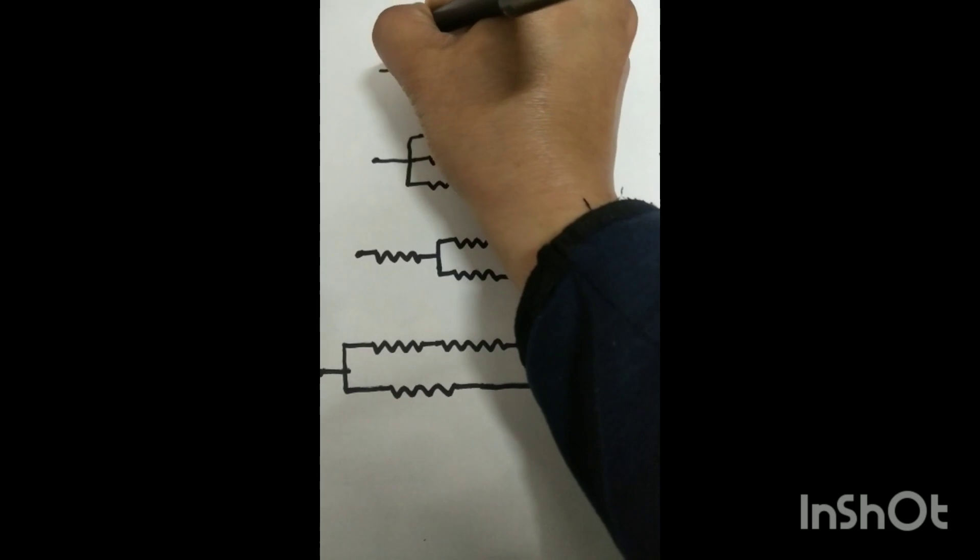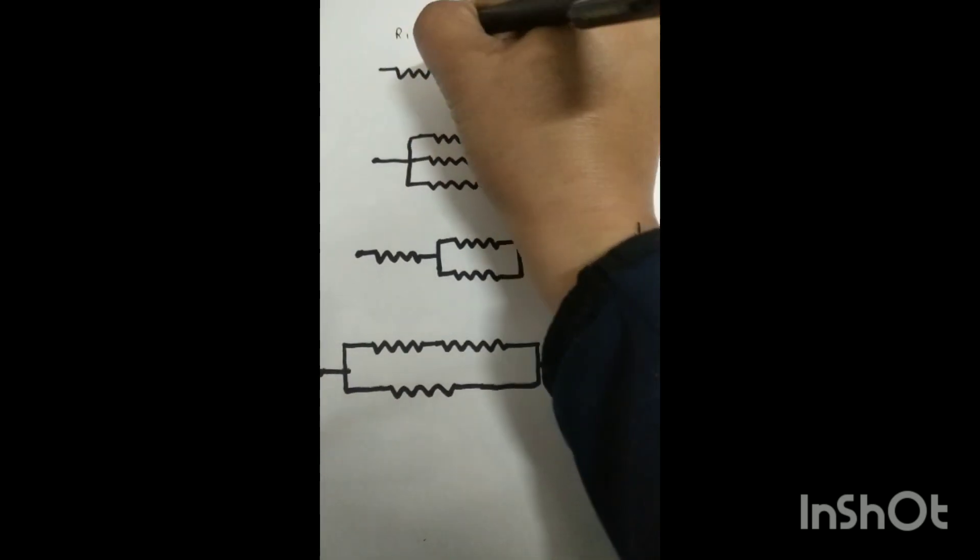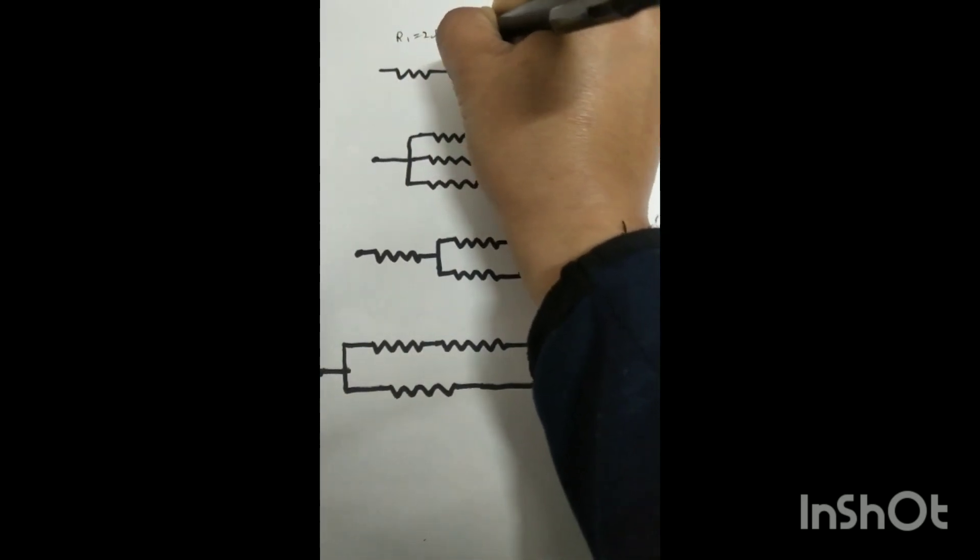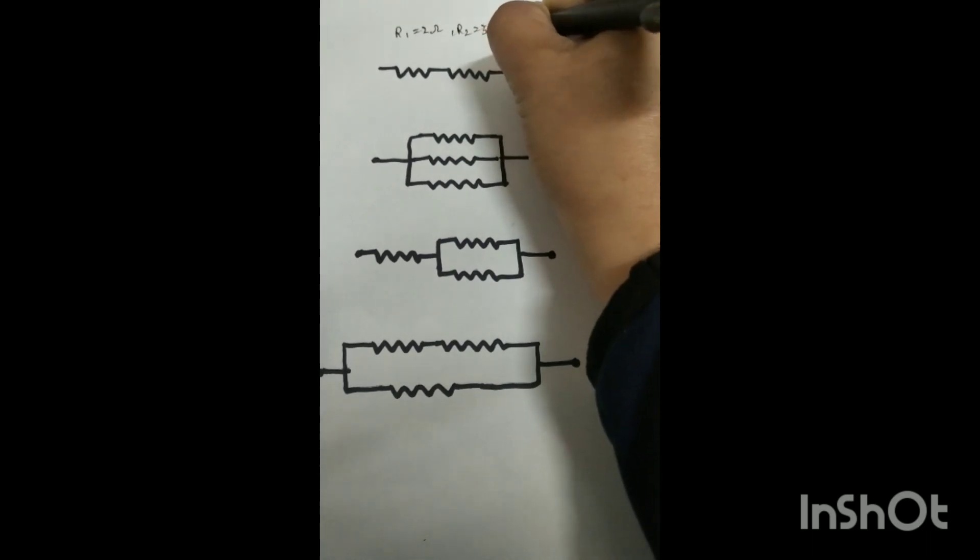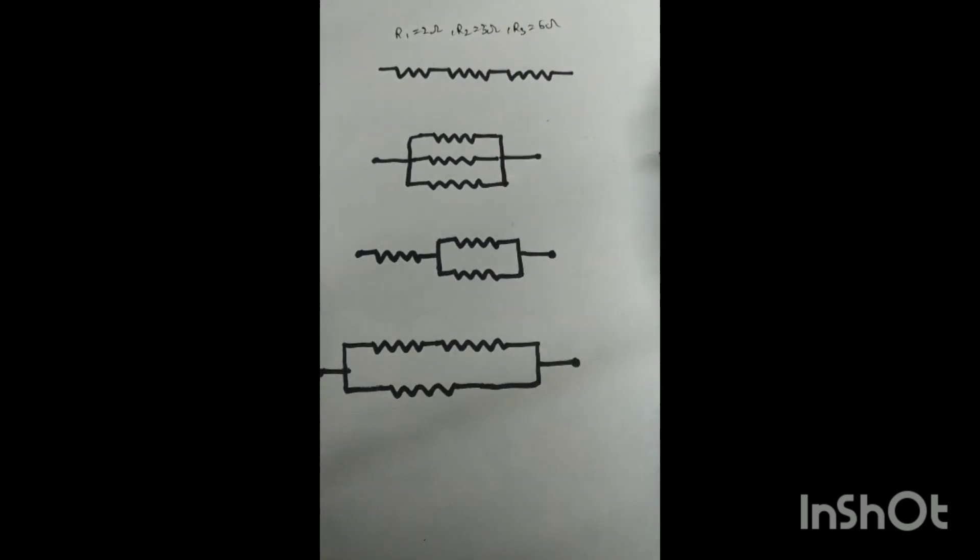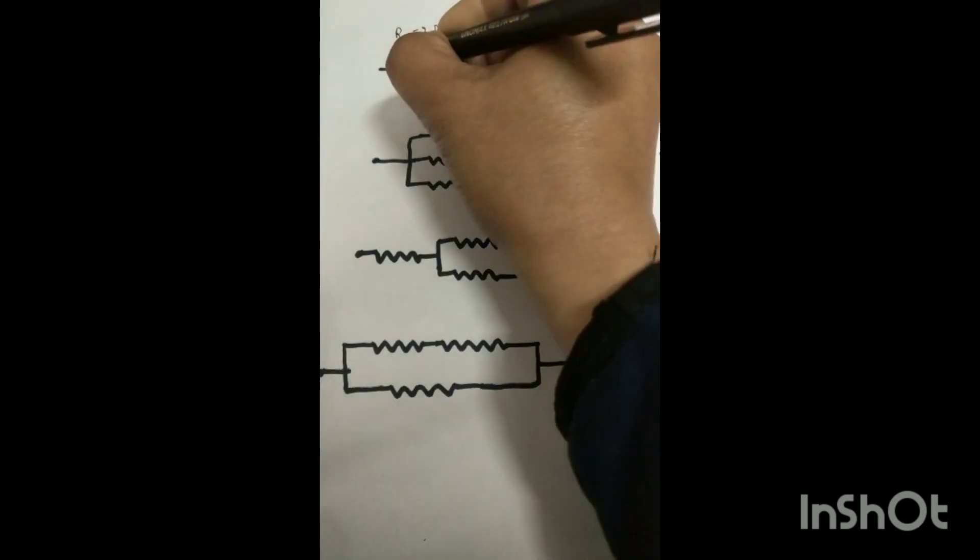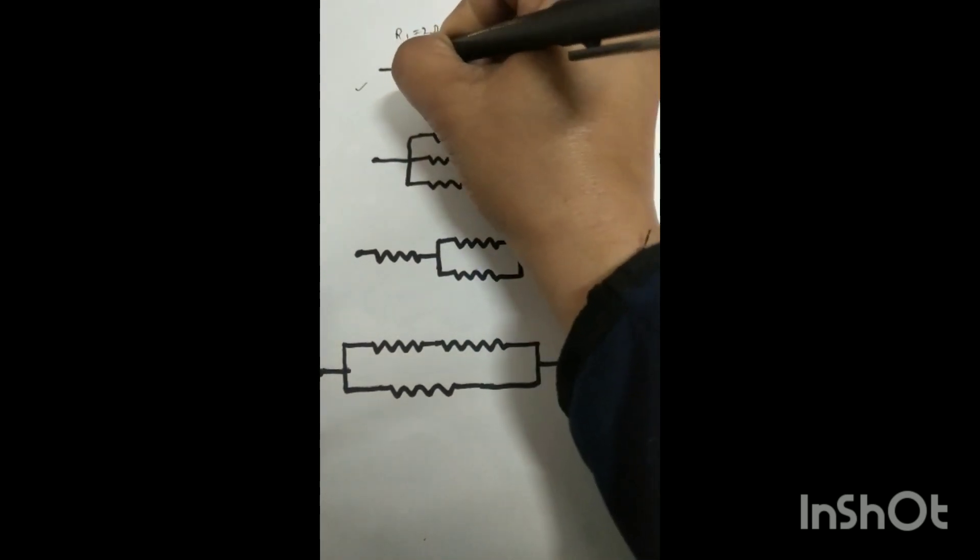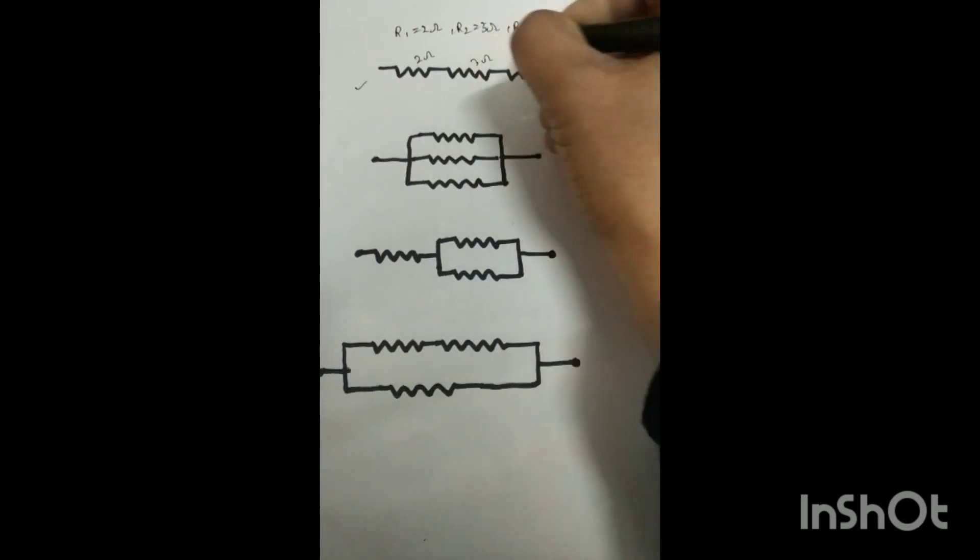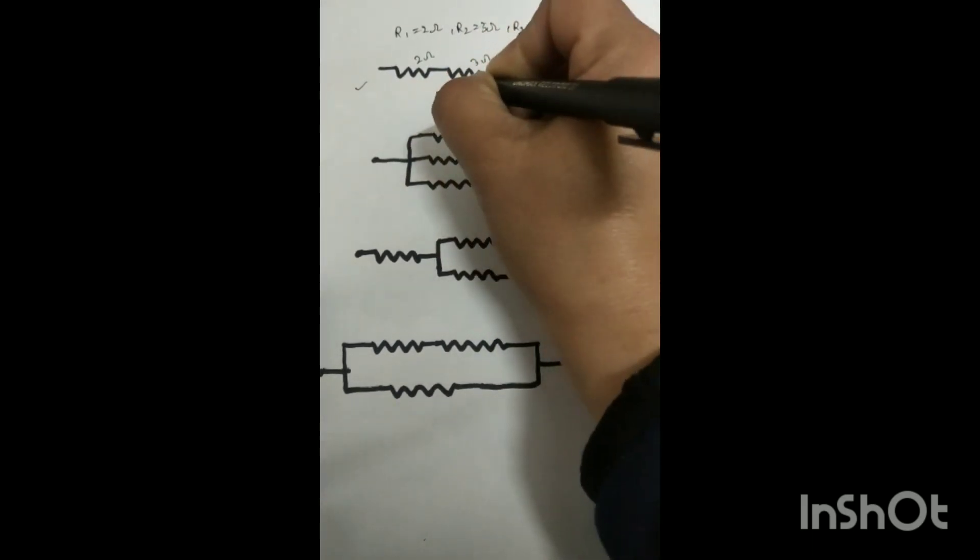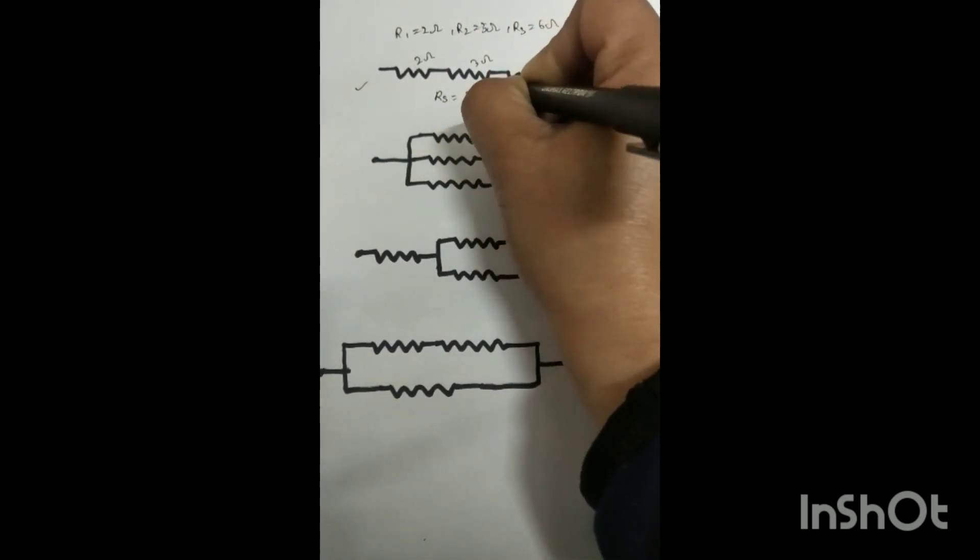Now in these structures we have to put our values one by one. So our values are R1 = 2 ohm, R2 = 3 ohm, and R3 = 6 ohm. For series connection, R = R1 + R2 + R3.